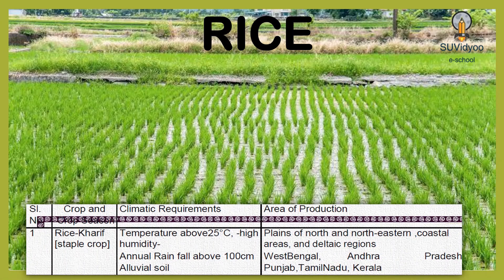Rice is the main staple crop of India. Rice is a Kharif crop. It requires temperature above 25 degrees Celsius with high humidity. The annual rainfall required is more than 100 cm and it grows well on alluvial soil. The areas of production of rice are the plains of north and northeastern India, coastal areas and deltaic regions. The major producing states are West Bengal, Andhra Pradesh, Punjab, Tamil Nadu and Kerala.